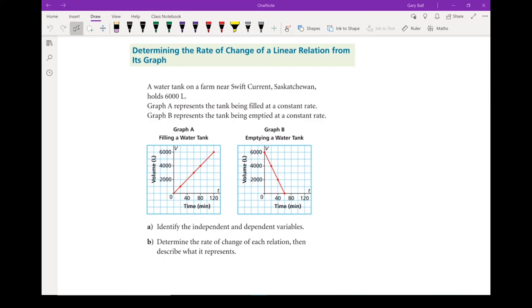For our last set of examples, let's take a look at determining the rate of change of a linear relation from its graph. So here we've got a situation where we've got a water tank that holds 6,000 liters. The first graph says it's being filled at a constant rate, and the second graph says it's being emptied at a constant rate. So we're going to do it twice. It's essentially two separate questions.